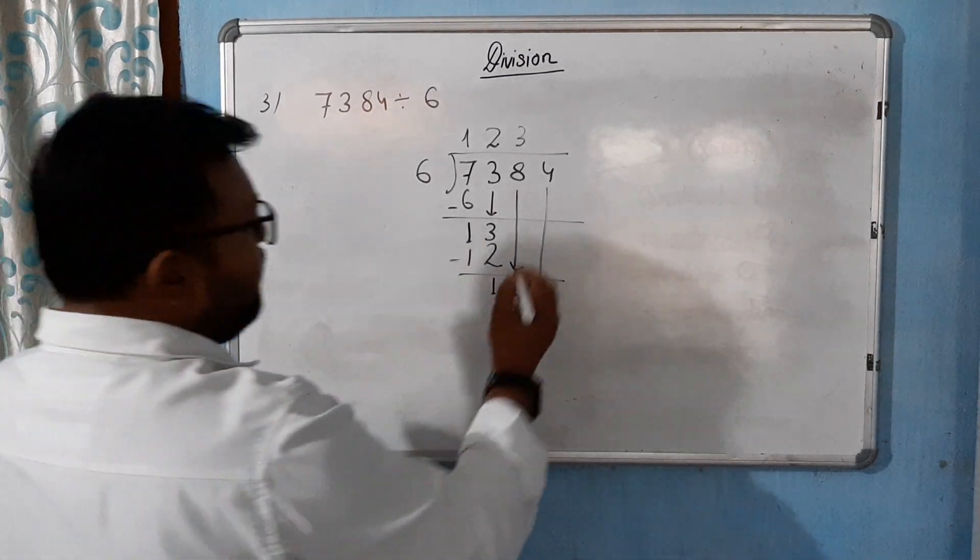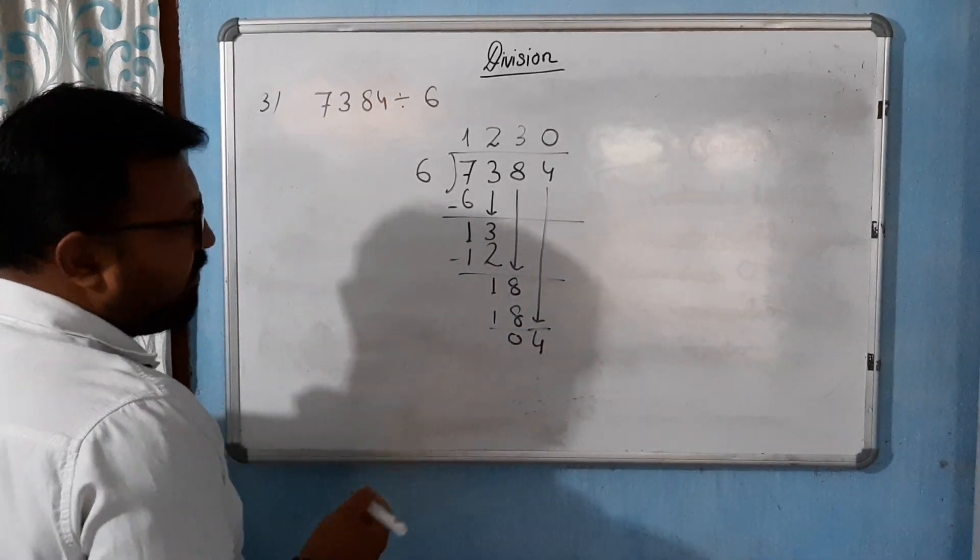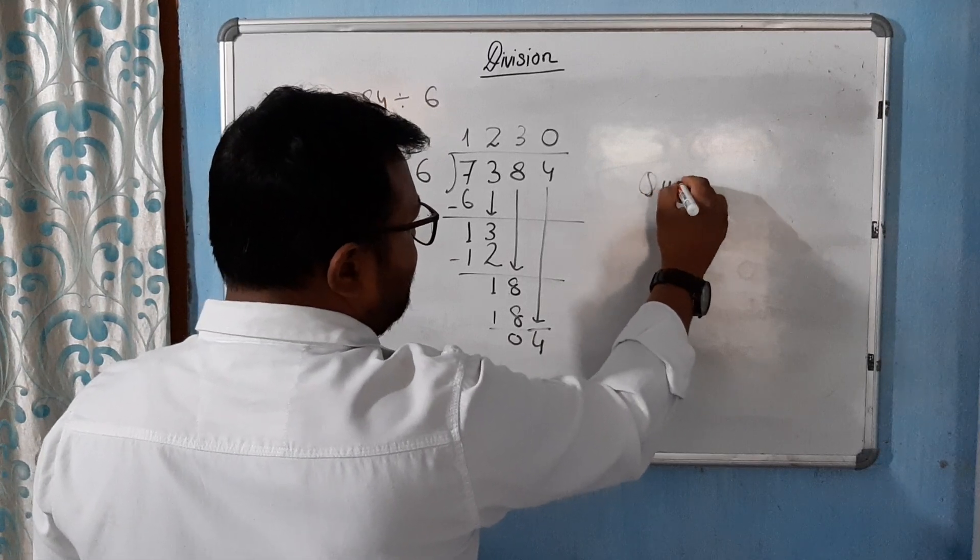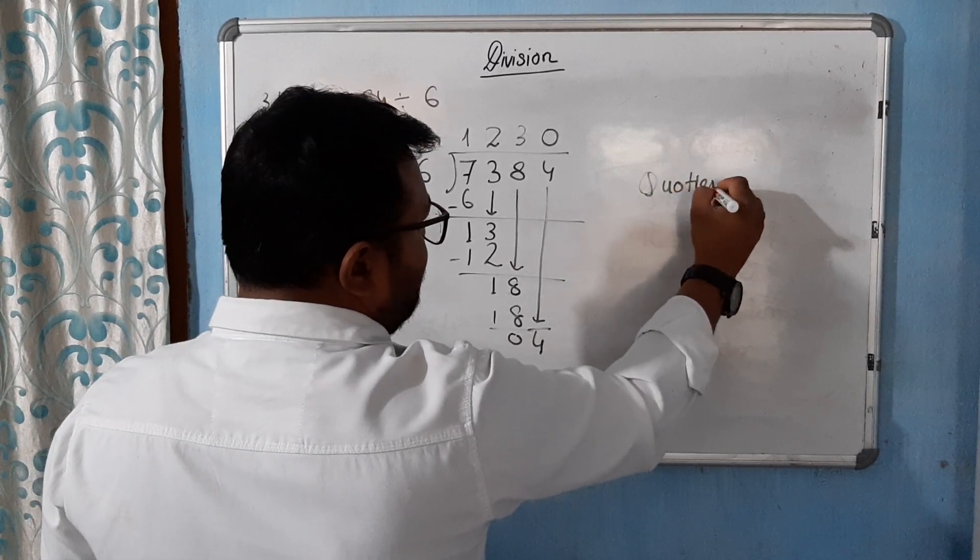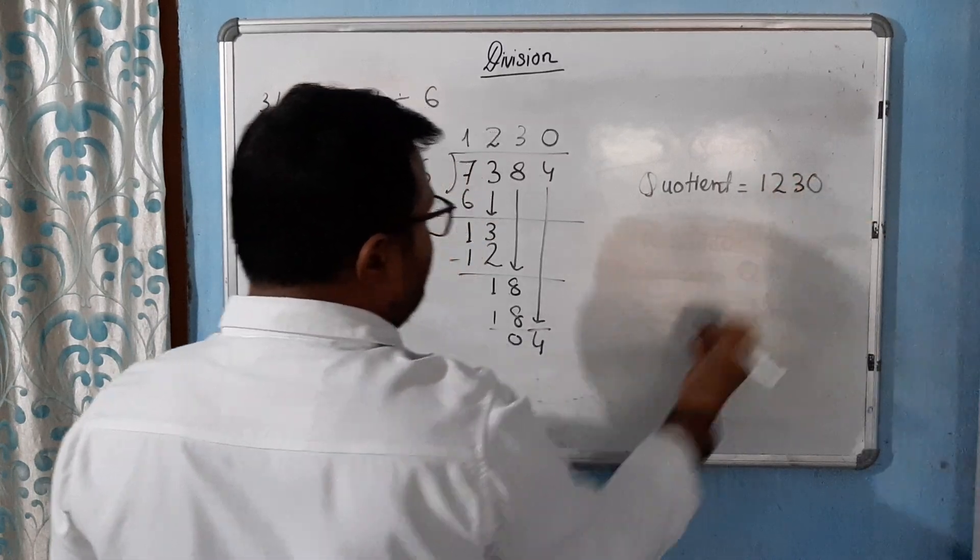Here we will have, okay, so quotient is how much? 1230.